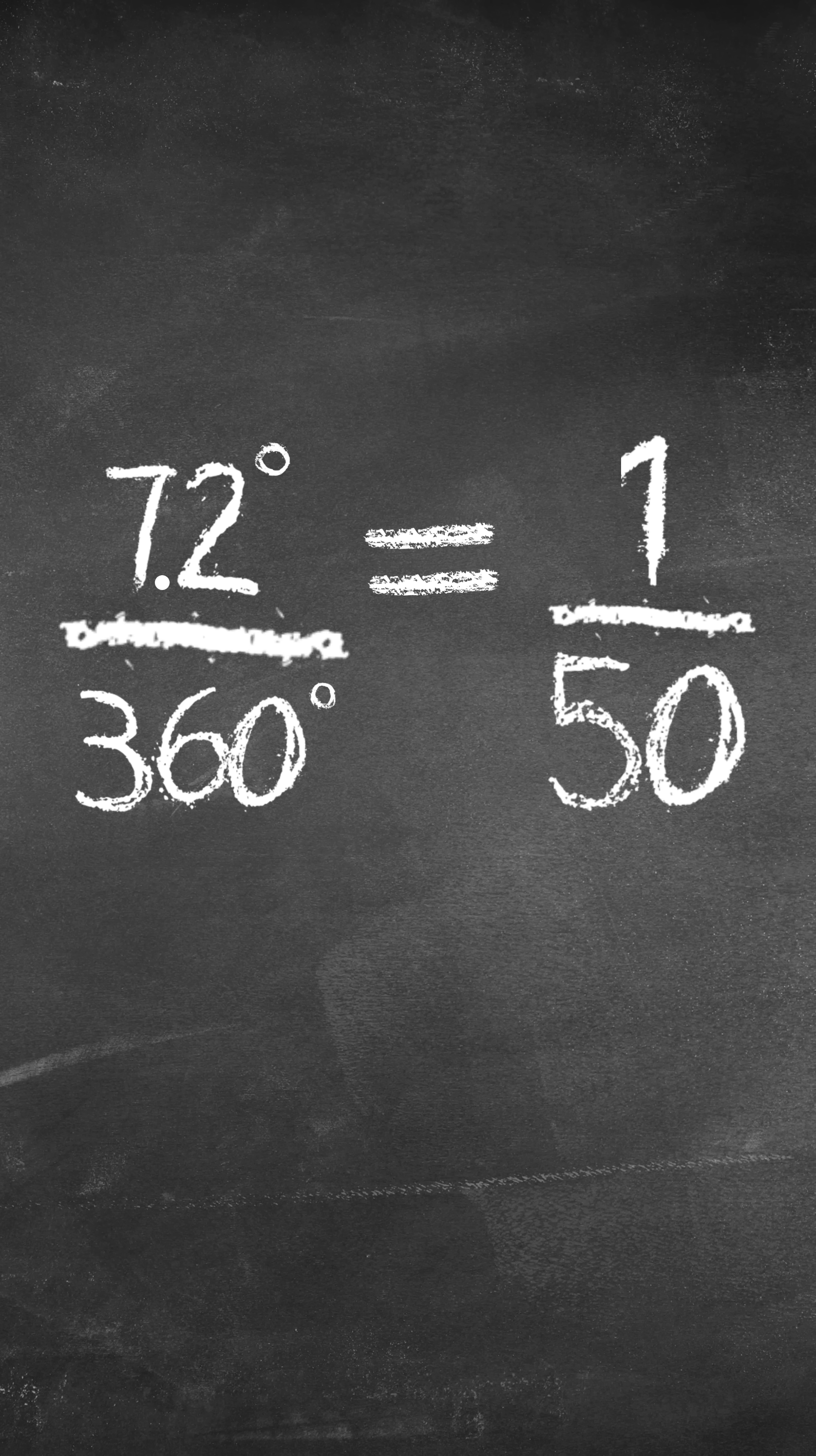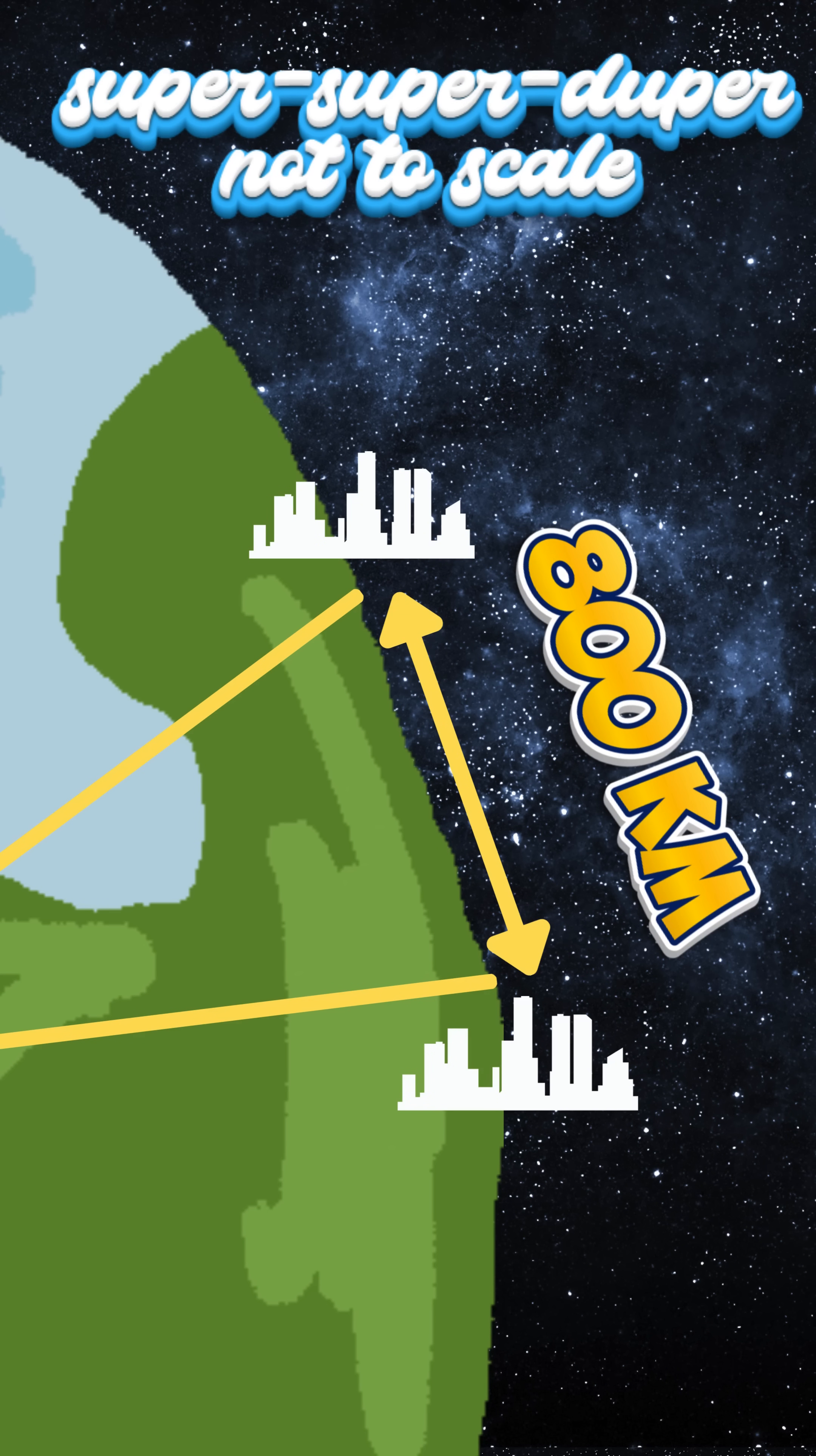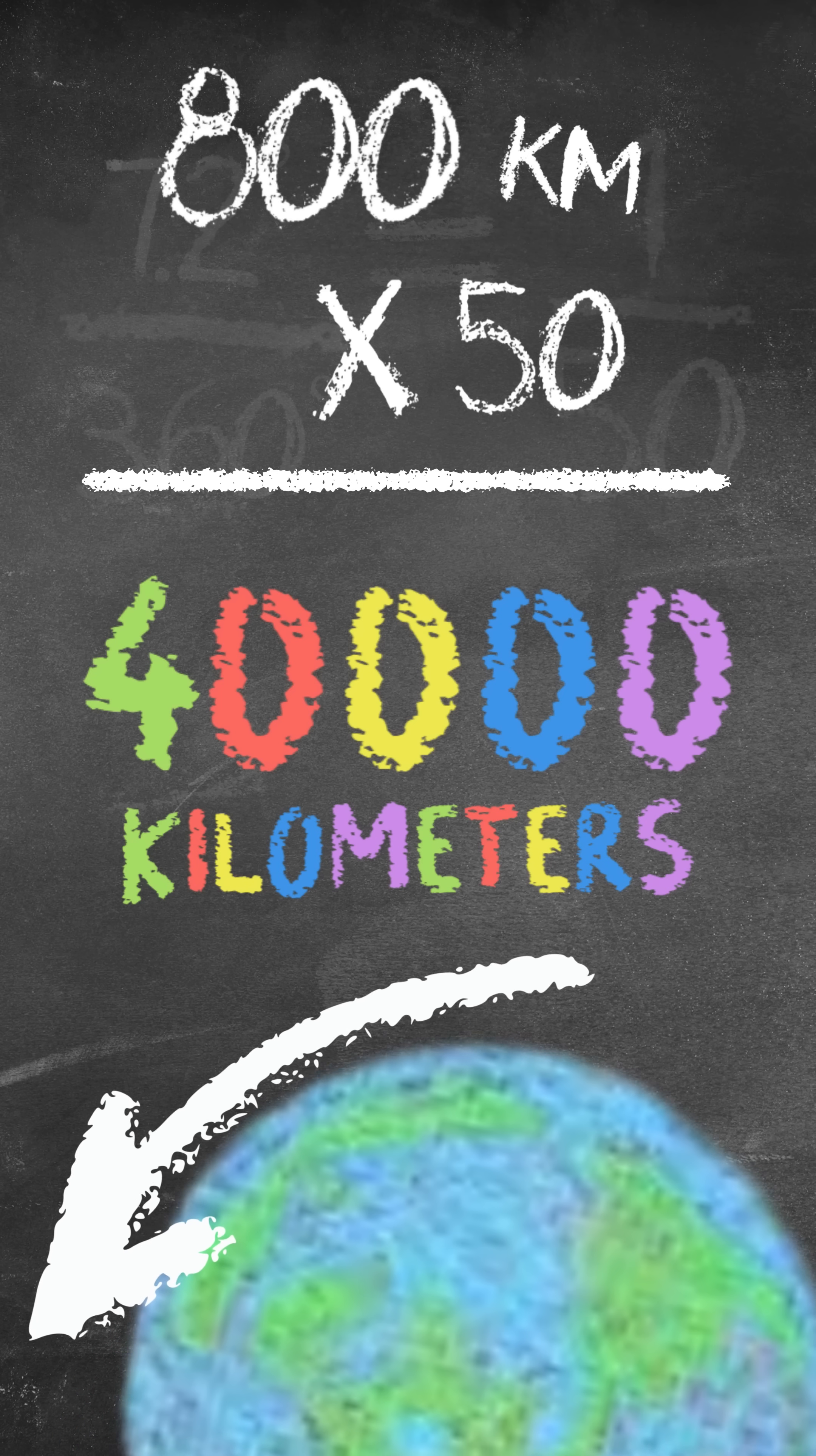He calculated that 7.2 degrees is 1/50th of a full 360 degree circle, so the distance between the two cities was 1/50th of the entire circumference. His resulting calculation for the circumference was 40,000 kilometers.